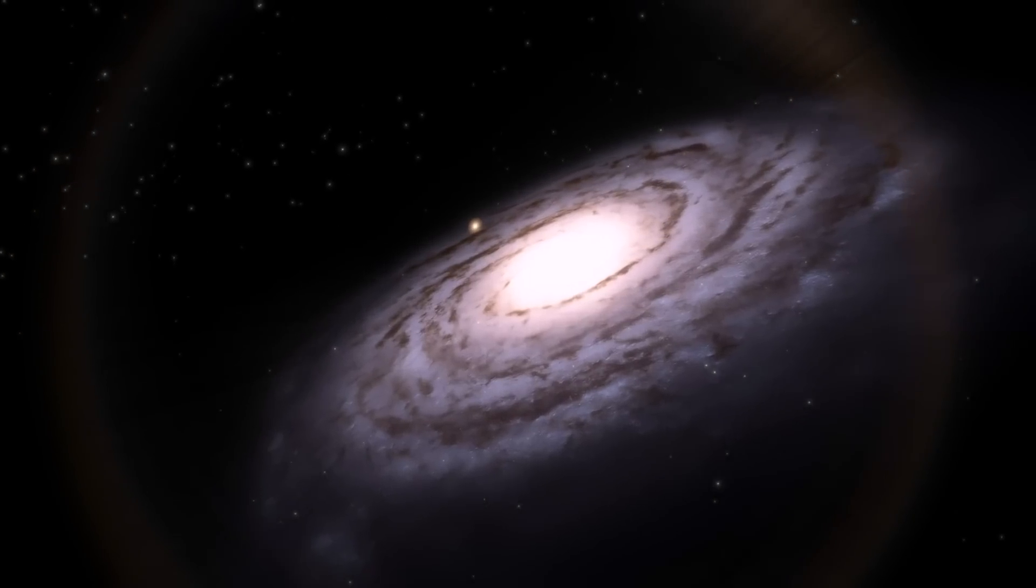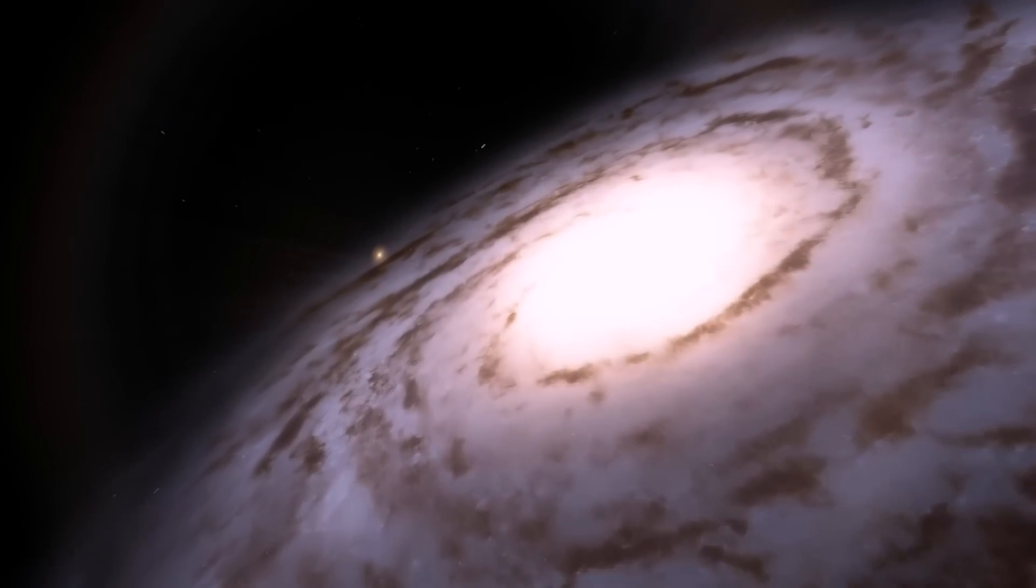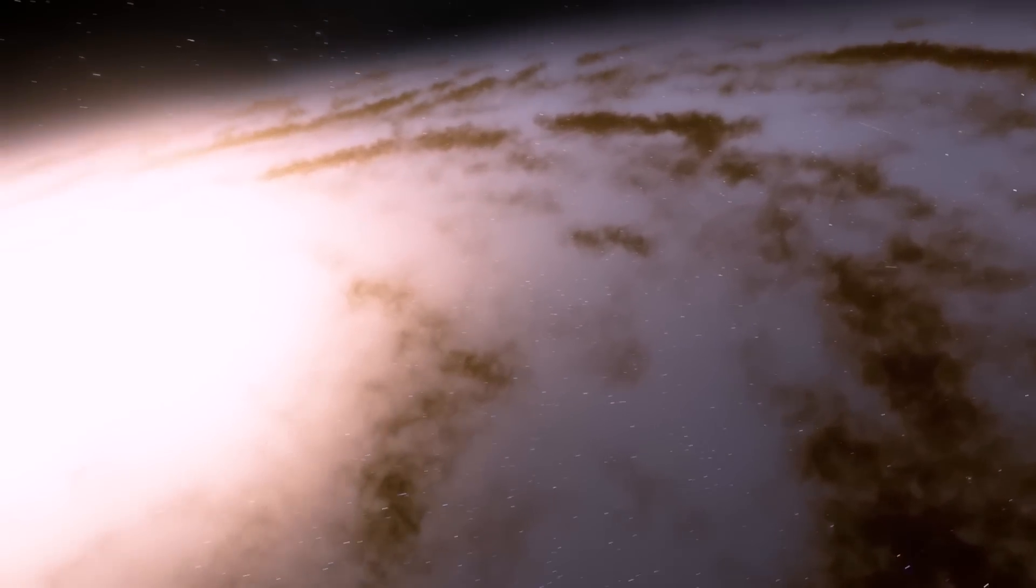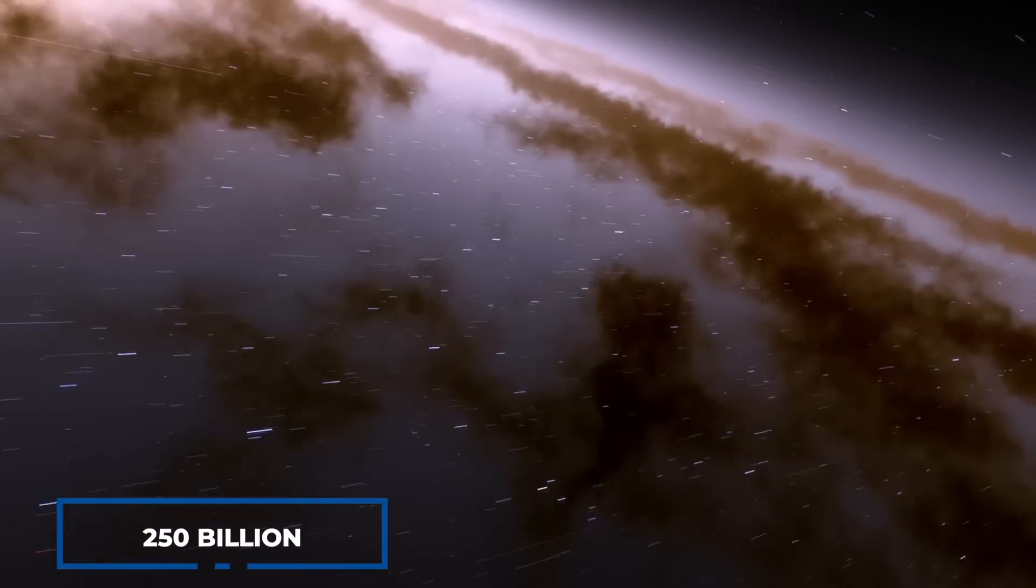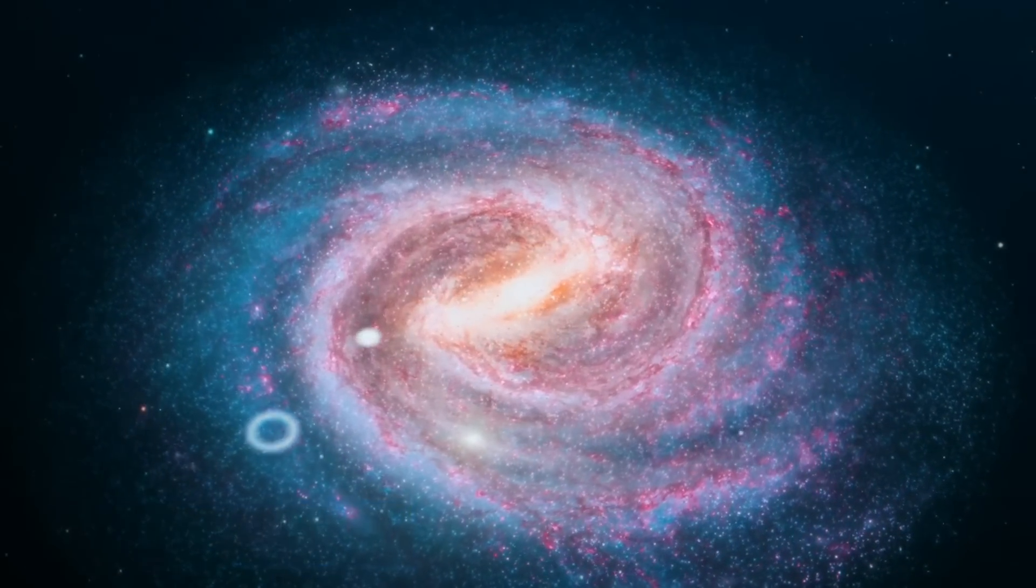Like our Milky Way, Andromeda is a spiral galaxy with a concentrated bulge of matter at its center, surrounded by a disk of gas, dust and stars, and an enormous halo. Despite containing a trillion stars compared to the Milky Way's 250 billion, the Milky Way is larger because it's believed to have more dark matter.